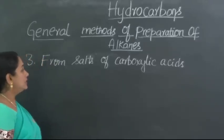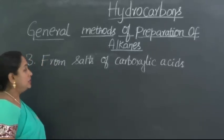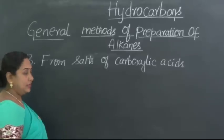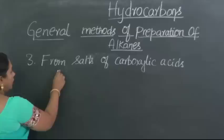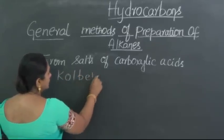Now, in today's class, let us learn the second method of preparation of alkanes by taking carboxylic acid. Now, this method is called Kolbe's Electrolysis Process.